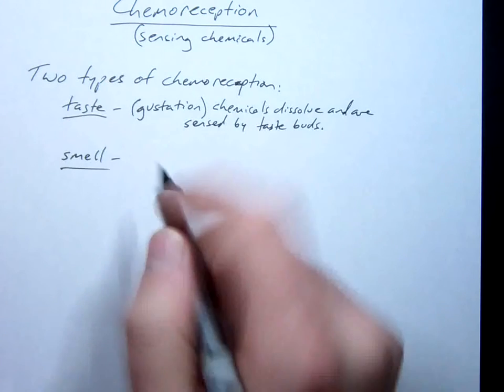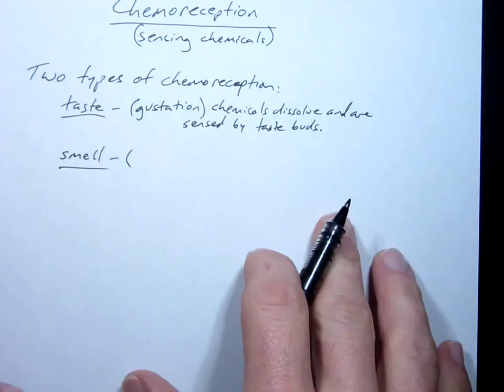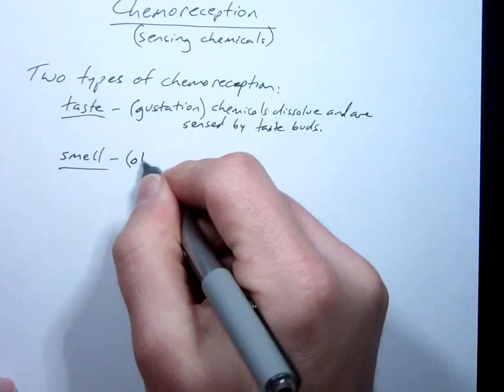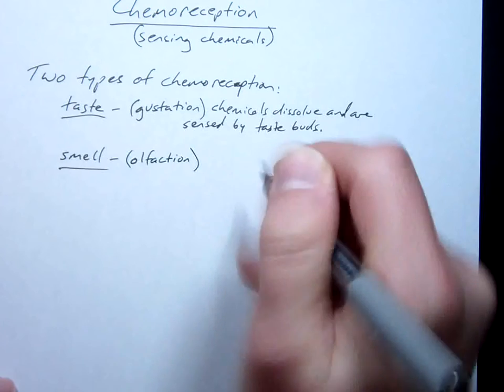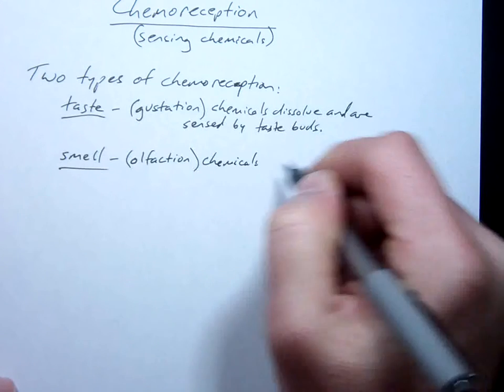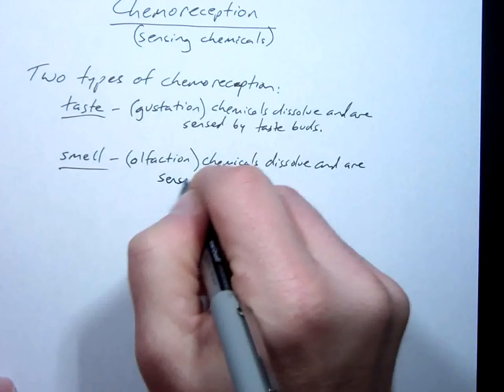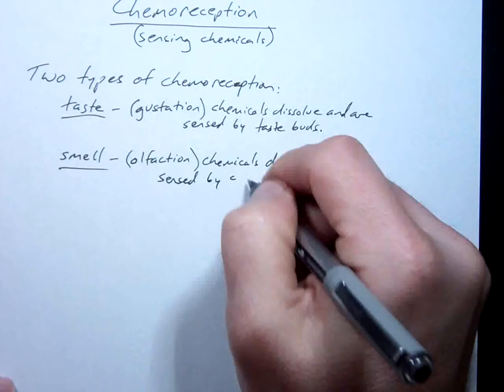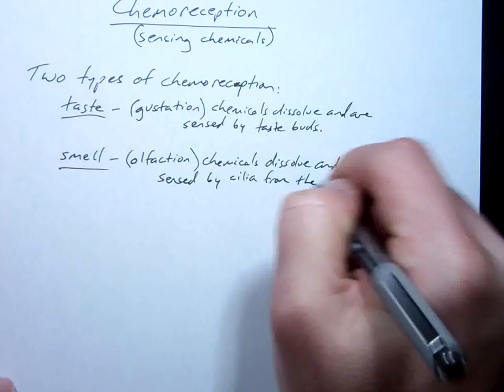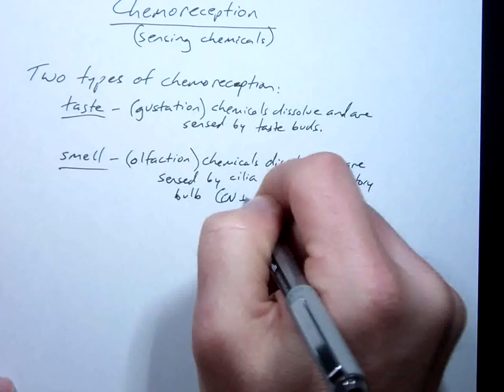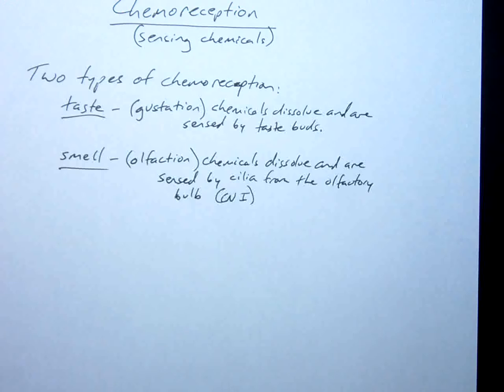Then there's smell. What's the name for that? Olfaction. Chemicals dissolve and are sensed by cilia from the olfactory bulb, which is cranial nerve number one. So to taste or smell anything, chemicals of that substance have to be dissolved in some way.